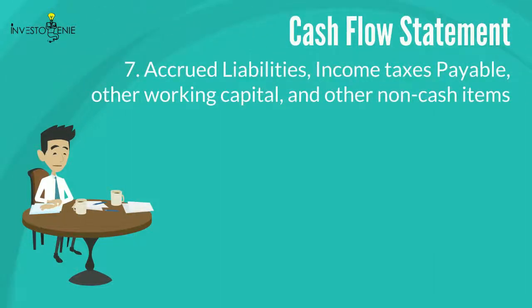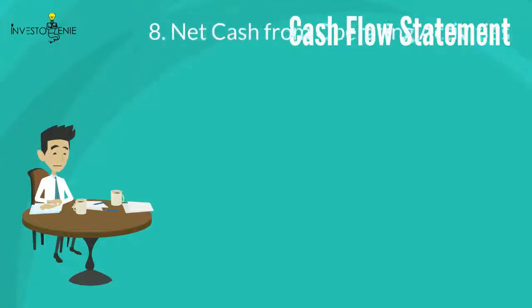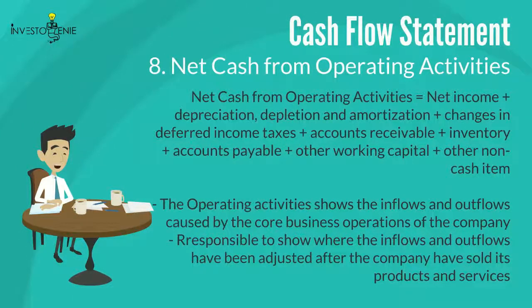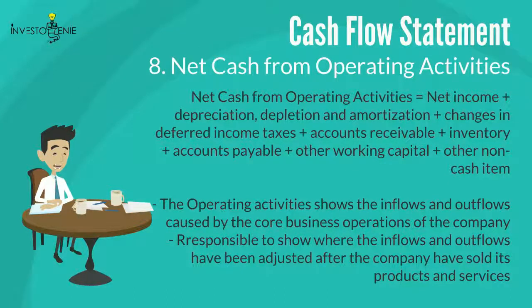Seven: accrued liabilities, income taxes payable, other working capital, and other non-cash items — any adjustments in these components from the last financial year are indicated in the cash flow from operating activities section. Eight: net cash provided by operating activities is the total sum of net income, depreciation and amortization, changes in deferred income taxes, accounts receivable, inventory, accounts payable, other working capital, and other non-cash items. This section shows inflows and outflows caused by the core business operations of the company.